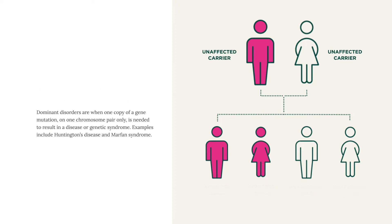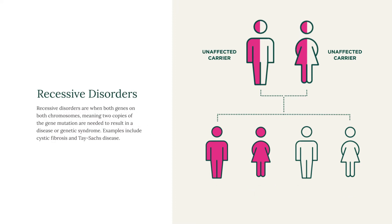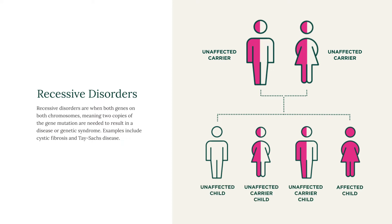Recessive disorders are when two copies of the gene mutation are needed to express a disease. Examples of autosomal recessive disorders include cystic fibrosis and Tay-Sachs disease.